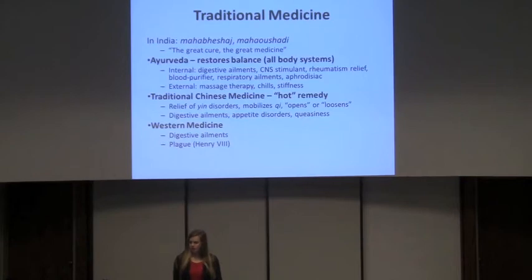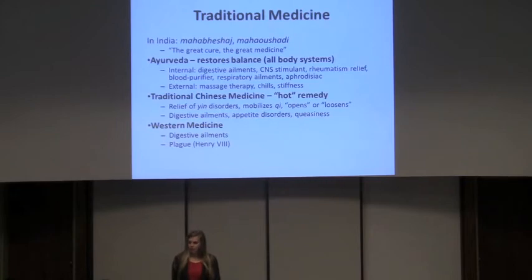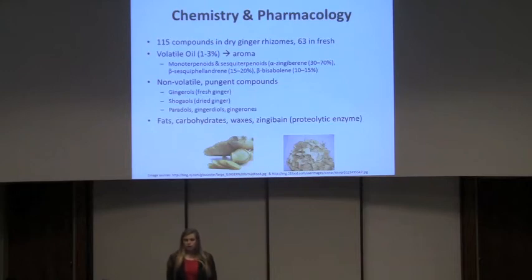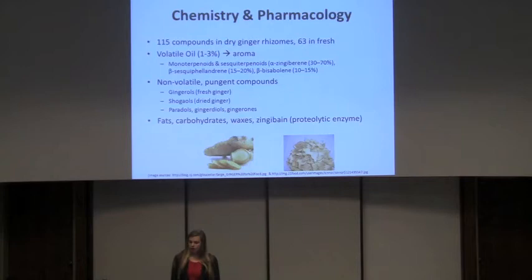Traditional Chinese medicine also used ginger for appetite disorders, queasiness, nausea, and vomiting. In Western medicine, its anti-emetic properties were noticed quickly, and Henry VIII promoted it as a treatment against the plague, likely due to its anti-inflammatory and antibacterial properties — which also drove the popularity of gingerbread. The chemistry and pharmacological properties of ginger are concentrated in the rhizome, where 115 compounds are found in the dry rhizome and 63 in the fresh rhizome, since chemical properties change upon dehydration.